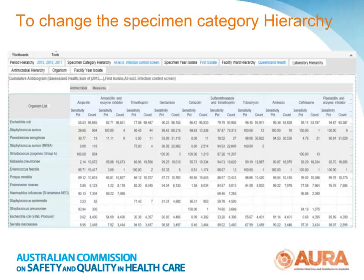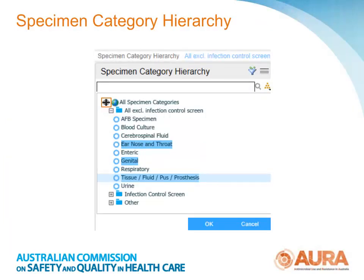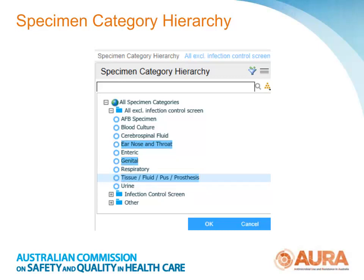You can also choose multiple non-consecutive items. For instance, if you want to change a specimen category, select the specimen category hierarchy filter. You can see the current view has all specimens excluding infection control screens. Click on the plus sign to expand the list, then holding the control key down, select ENT, genital, and tissue fluid pus. Once all the changes to the slicers have been made, they can be applied by selecting OK and the data displayed will reflect the changes.